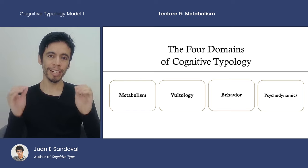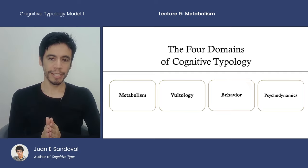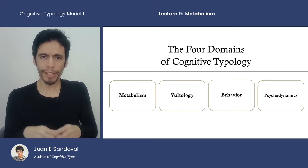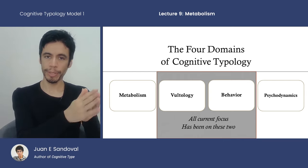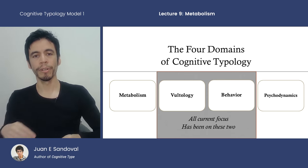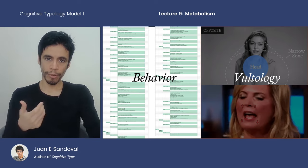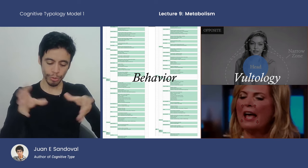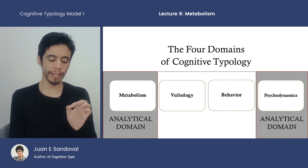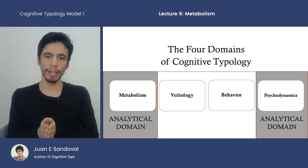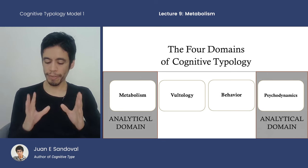One of the most fundamental aspects of the CT model is that it's divided into four domains: metabolism, pathology, behavior, and psychodynamics. Everything we've been looking at thus far is focused on pathology and behavior — tracking pathological similarities and comparing them to behavioral similarities. The motif matrix is the behavioral domain and the video analysis is the voltological domain. These two middle domains are the empirical domains, while the other two — metabolism and psychodynamics — are the analytical domains.